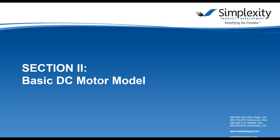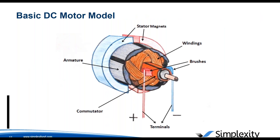Now we'll get into a basic DC motor model. Here's a diagram of the construction of a DC motor. On the outside we have the stator magnets — typically two permanent magnets. We have an armature formed of a stack of stamped steel called laminates, stacked together. Around the armature you create the winding by winding copper wire, which is used to create the rotating magnetic field. The windings are fed by the commutator and brushes: the brushes attach to the externally applied DC voltage, and through the commutator that voltage is transferred to the windings. As the brushes make contact with different sections of the commutator ring, the voltage is applied to different windings.